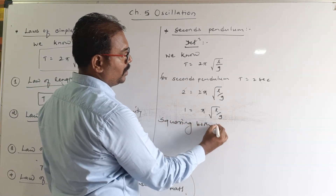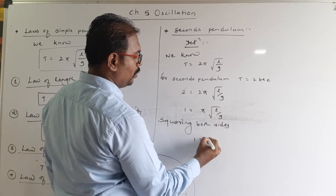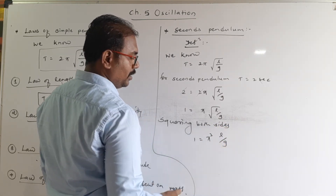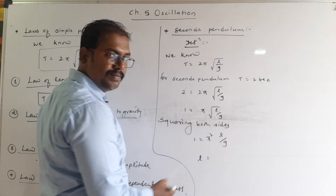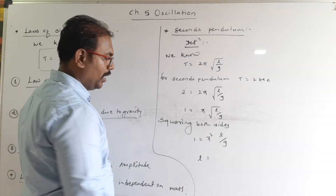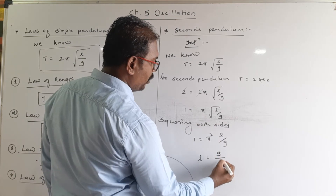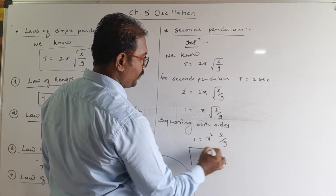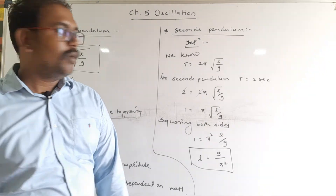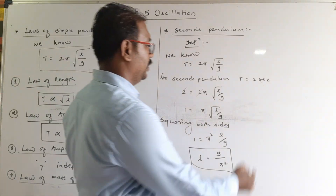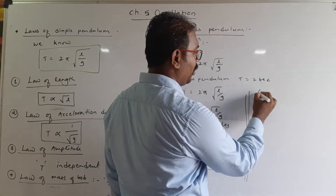Squaring both sides gives 1 = π²l/g, so we can write the formula for l as l = g/π². The value of g on Earth is 9.8.